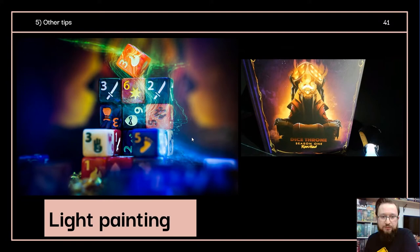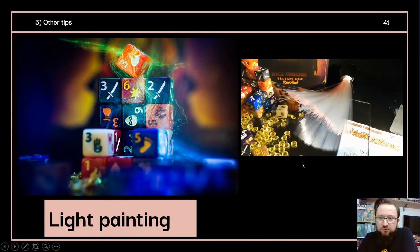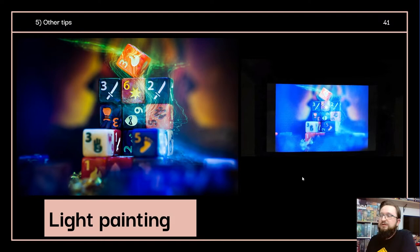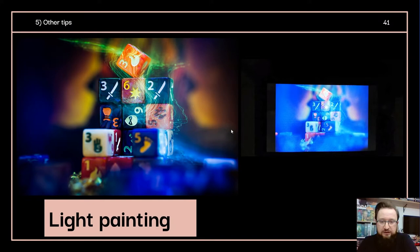Manual mode lets you control all parameters including shutter speed. Set your shutter speed to a few seconds — maybe one, two, or three seconds. When the shutter is open for a long time, all light movement is registered on the camera sensor. You can also ask why the dices don't fall down — because they're connected with Blue Tack. This is a very important thing in light painting.